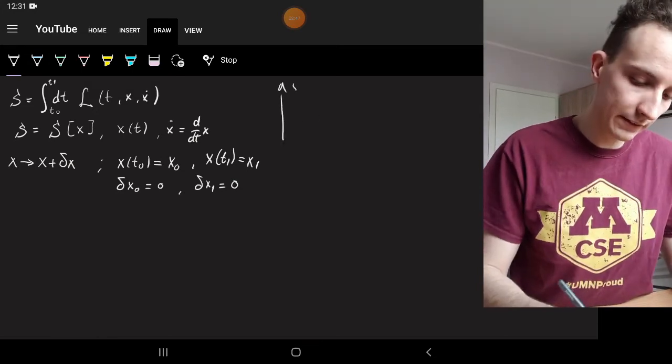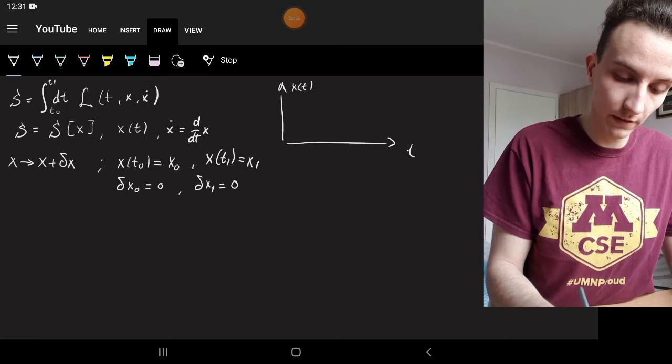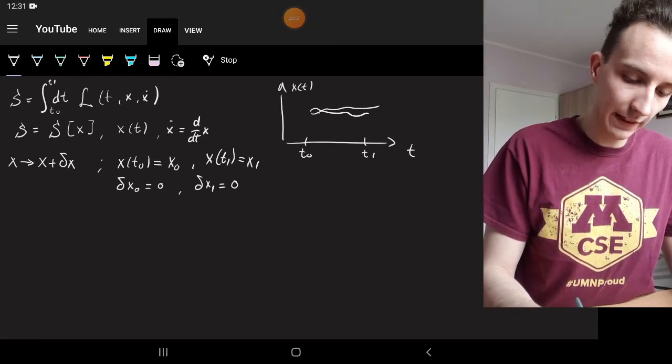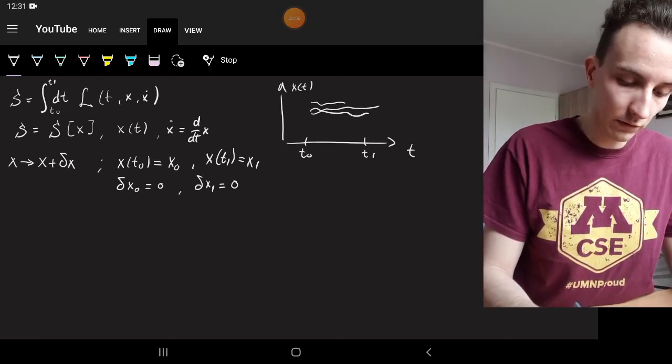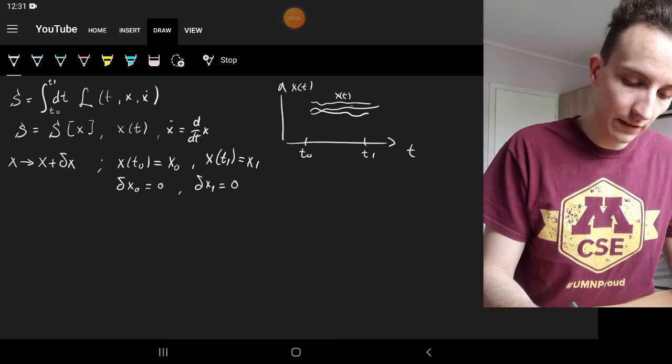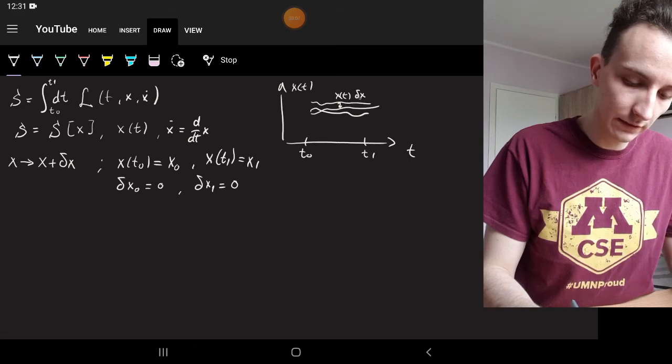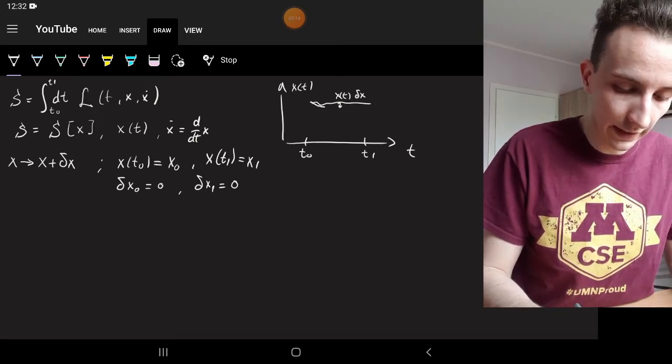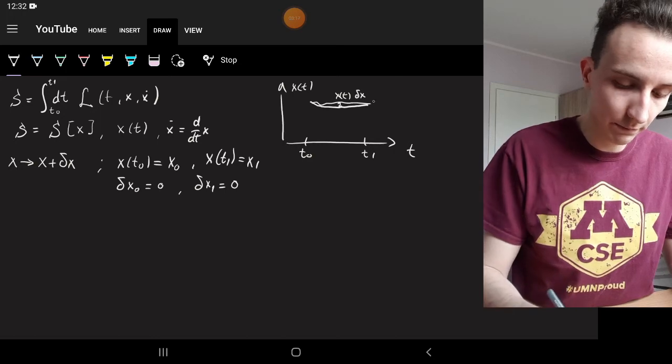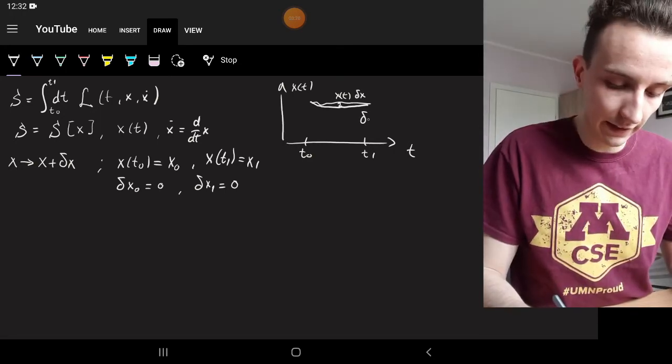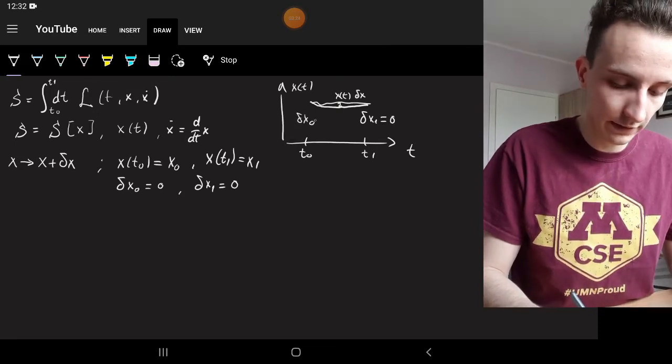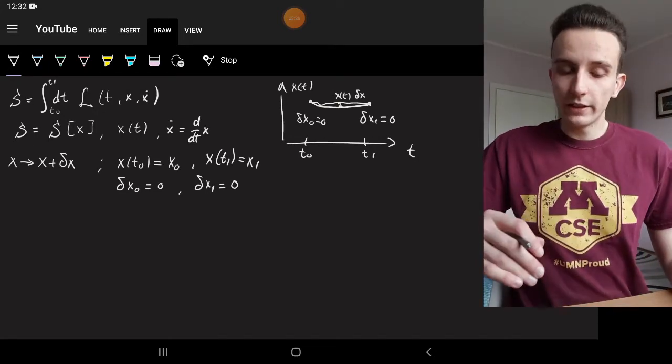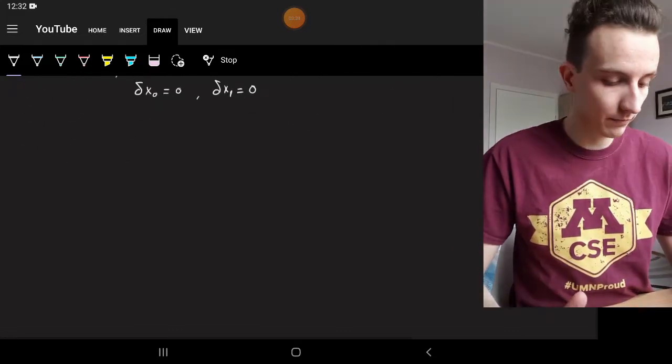So this function x of t, let's say that this is t0 and t1, this function could be this, it could be that, anything. And now if it was something like this, that would be x of t, and then all of these differences would be delta x. But what's important to note is that they have to start and end in the same point. That's what we specified by saying that delta x1 is 0 and delta x0 is 0. And now we're looking for which kind of these functions minimizes the action s.